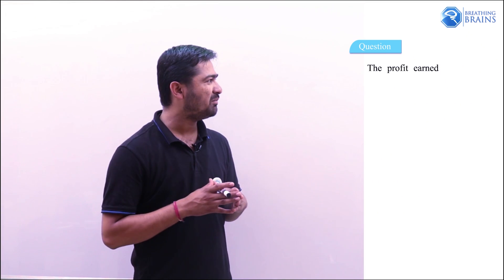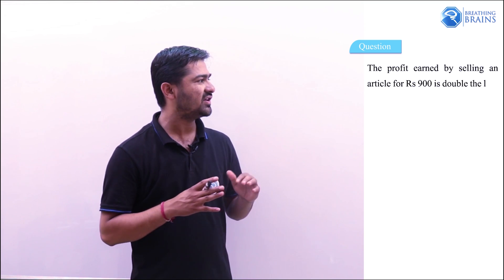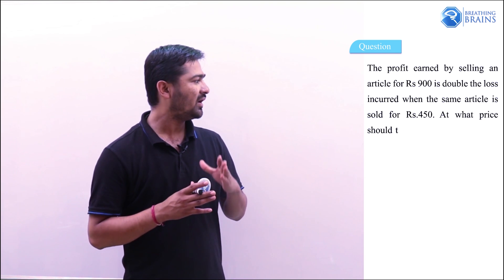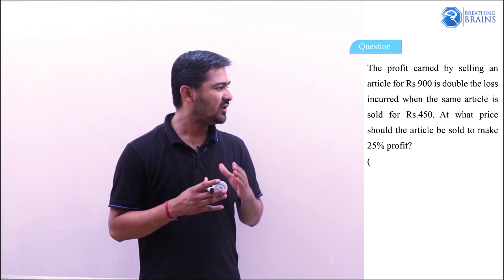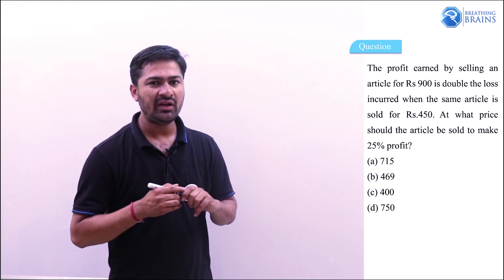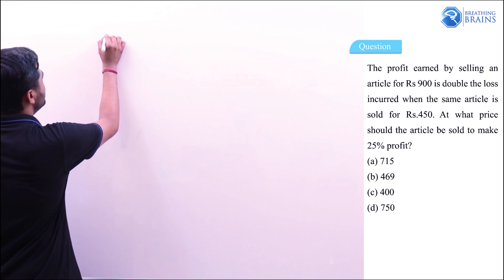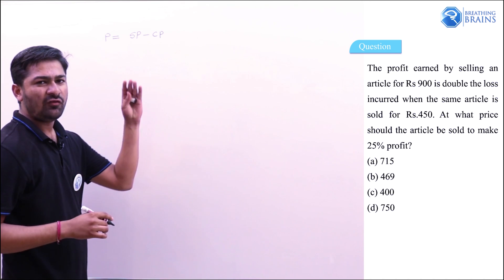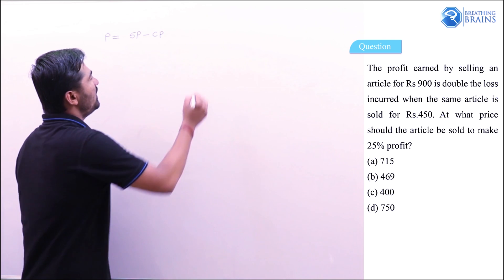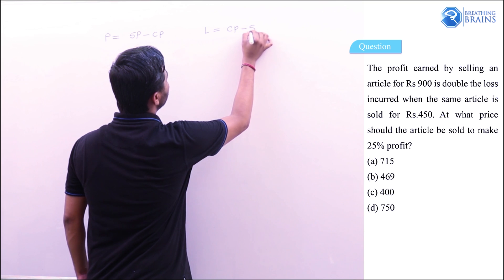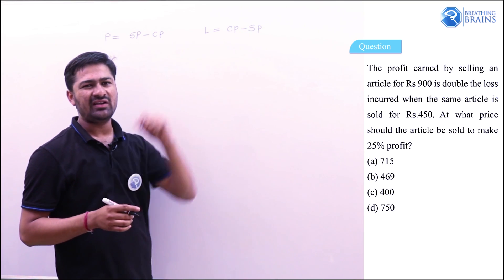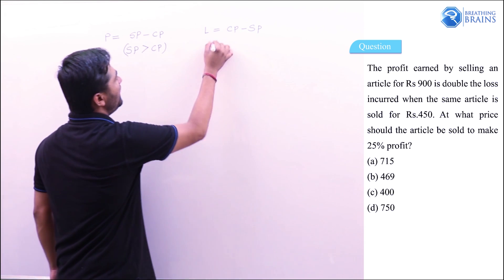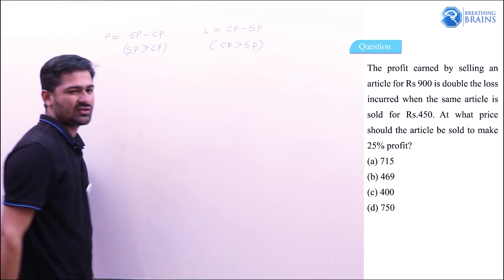Next question: The profit earned by selling an article for ₹900 is double the loss incurred when the same article is sold at ₹450. At what price should the article be sold to make 25% profit? Key relations: when SP > CP, profit = SP − CP; when CP > SP, loss = CP − SP.